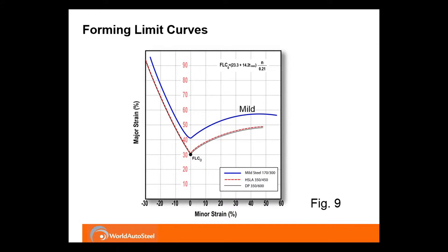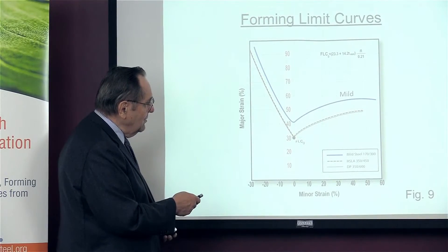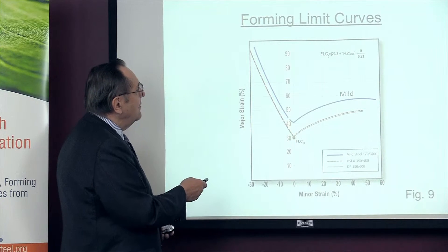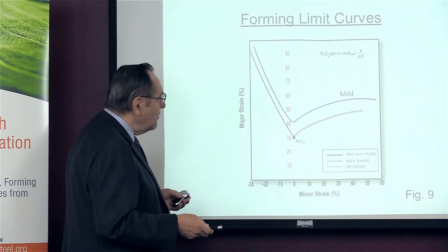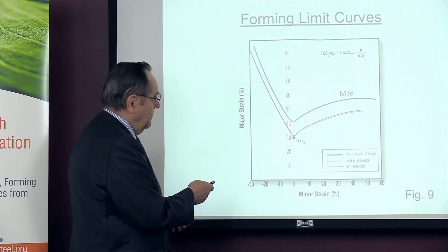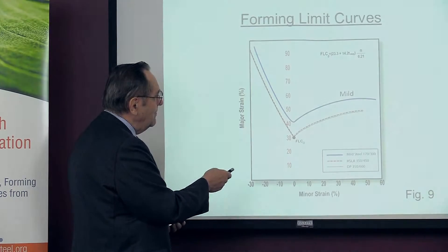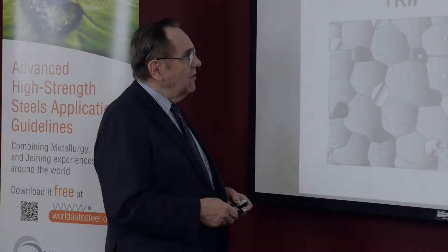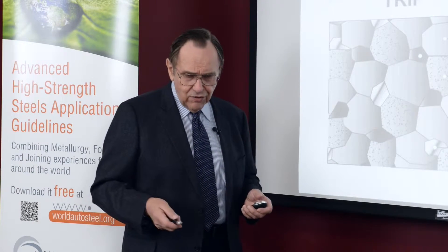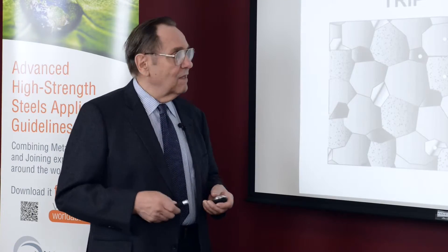Here's your mild steel. The n value controls the height of this curve — FLC sub zero. The higher the n value, the higher the curve, and higher is better. So here we have a 40 FLC sub zero for your mild steel. And here are the two curves — one for your HSLA steel and one for your dual phase. It does give you a little bit of a higher stress-strain curve, but it is assigned a job to do and it does it very well.